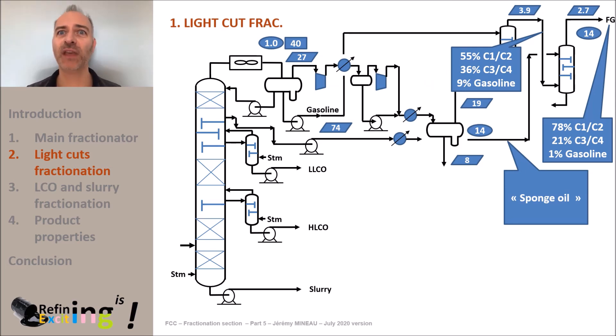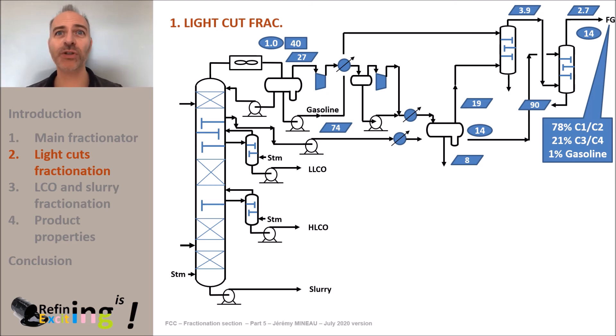At the same time, the amount of gasoline in the gas decreases from 9 weight percent down to 1 weight percent. Once the sponge oil has absorbed LPG and the gasoline, it is sent back to the main frack. Now that we have produced a C1 plus C2 rich gas stream, we now have to focus on the two gasoline streams containing a high proportion in LPG. We will discuss this in the next part.